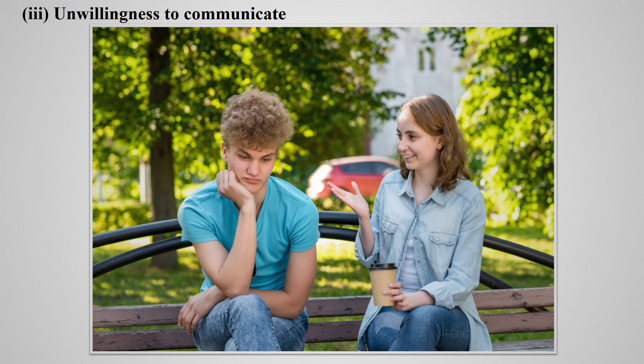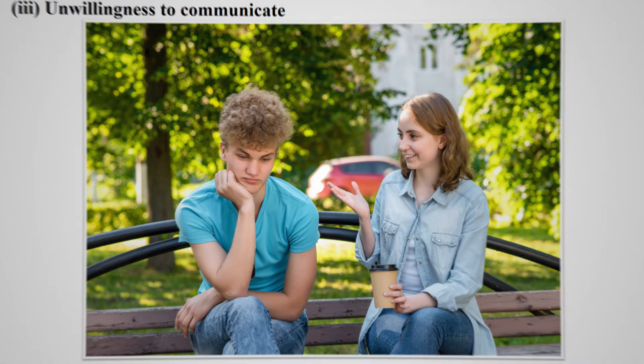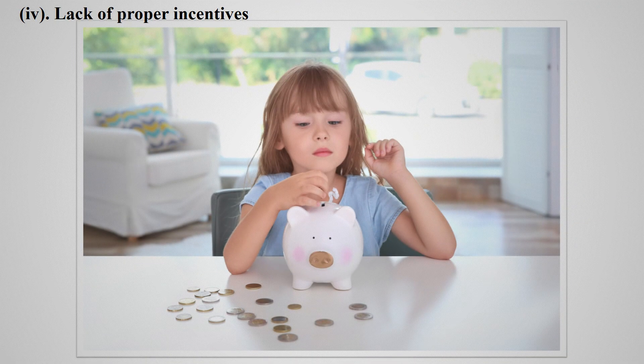The next personal barrier is unwillingness to communicate. Sometimes subordinates may not communicate with superiors because they observe it may be harmful to their positions or interests, so they willingly stop communicating.